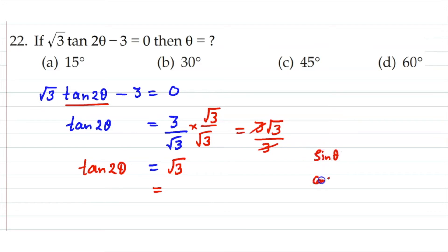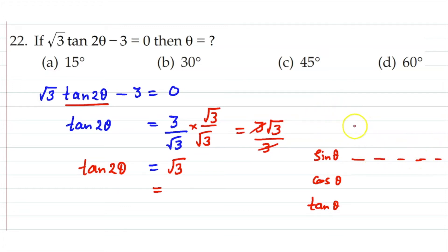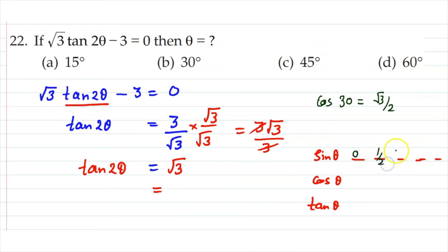You need to remember the individual values — don't rely only on making a table. The sine row goes: 0, 1/2, 1/√2, √3/2, 1 for angles 0°, 30°, 45°, 60°, 90°. For cosine, read the sine row in reverse: 1, √3/2, 1/√2, 1/2, 0. For tangent, divide sine by cosine.